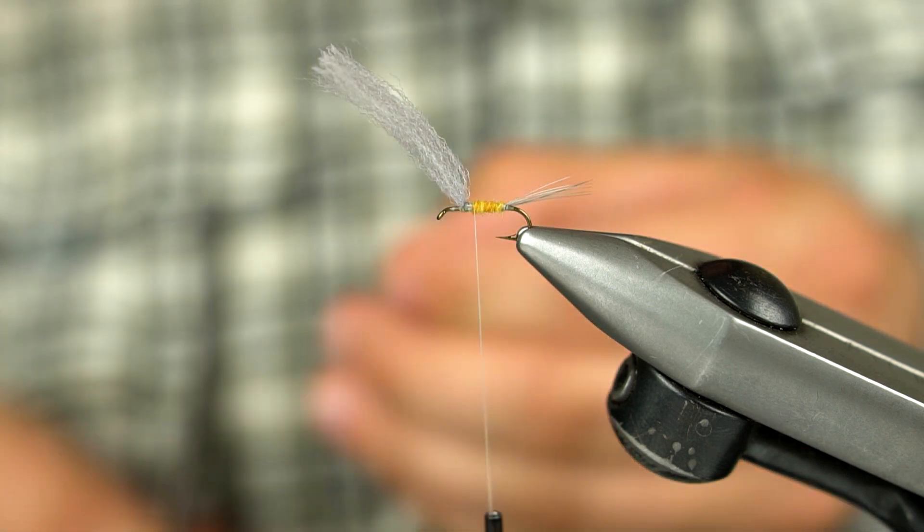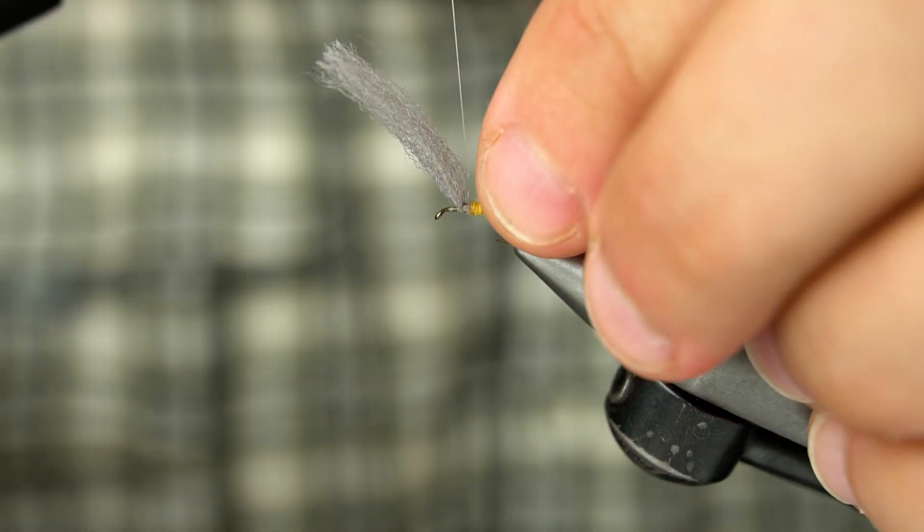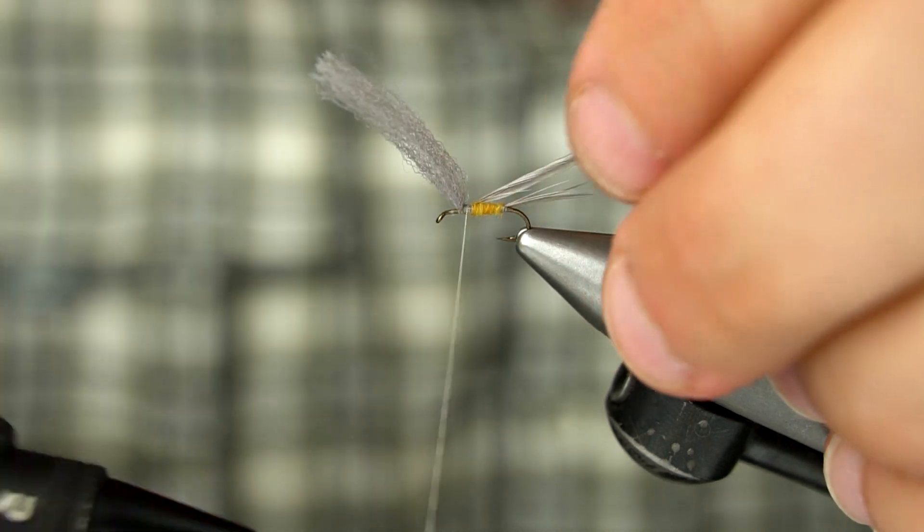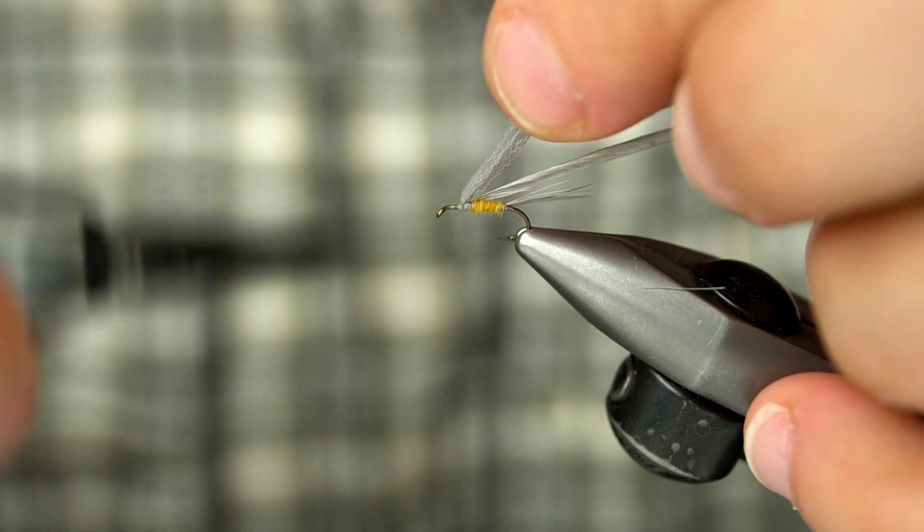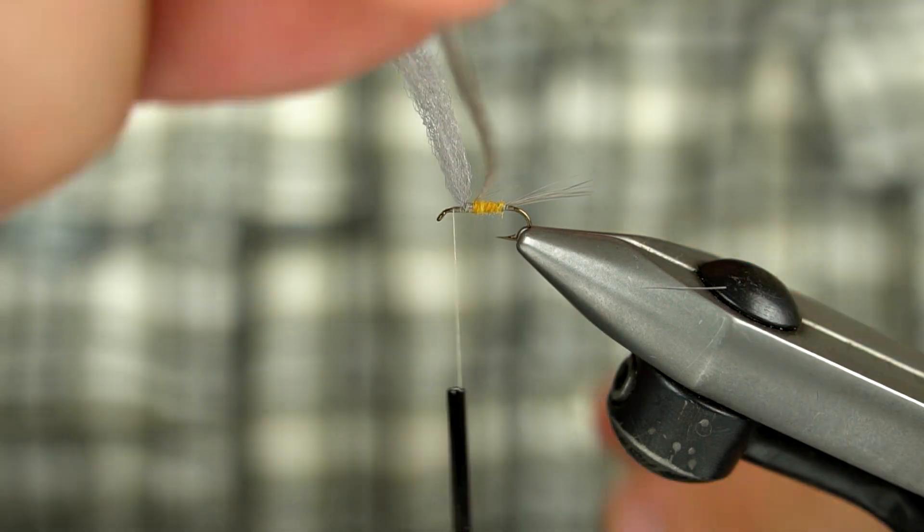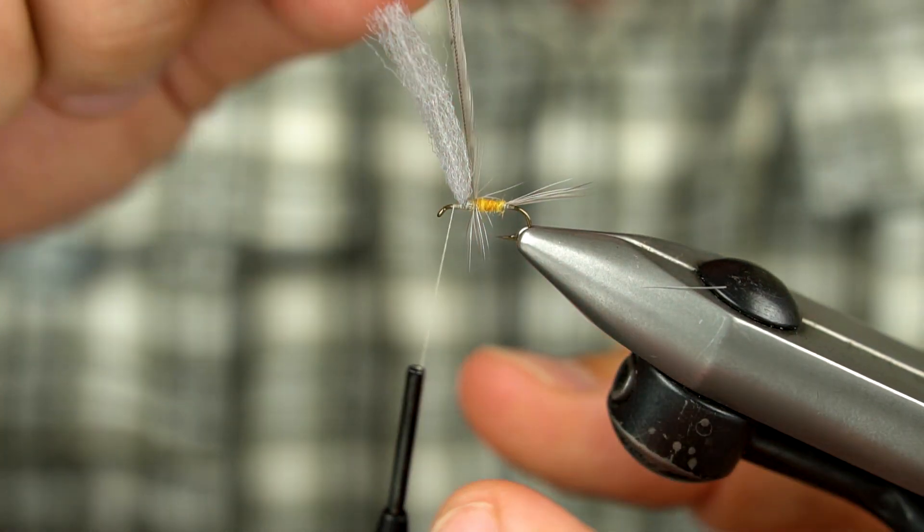Now we secure a hackle feather to the shank, and with touching turns wrap the feather towards the eye of the hook.